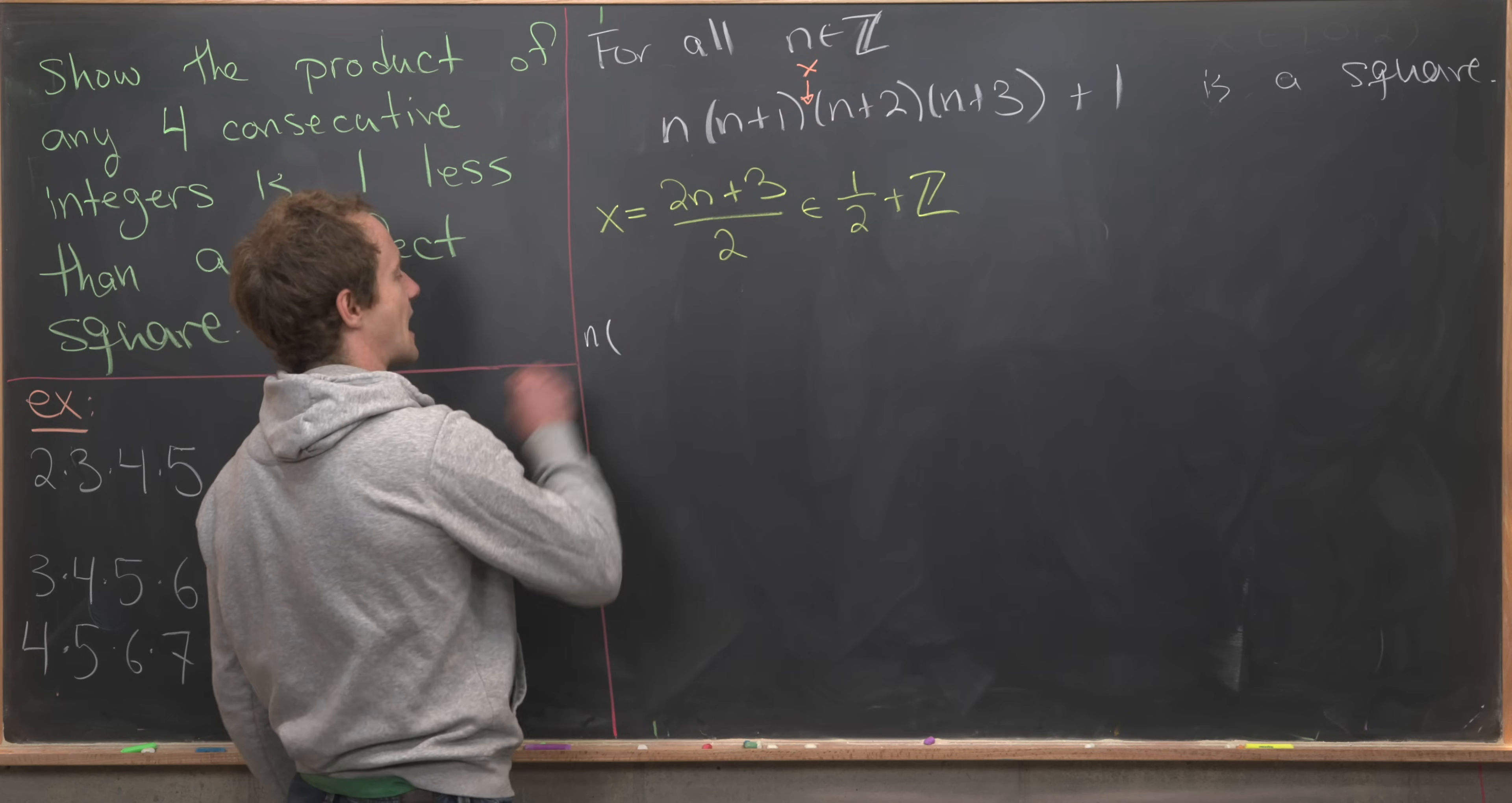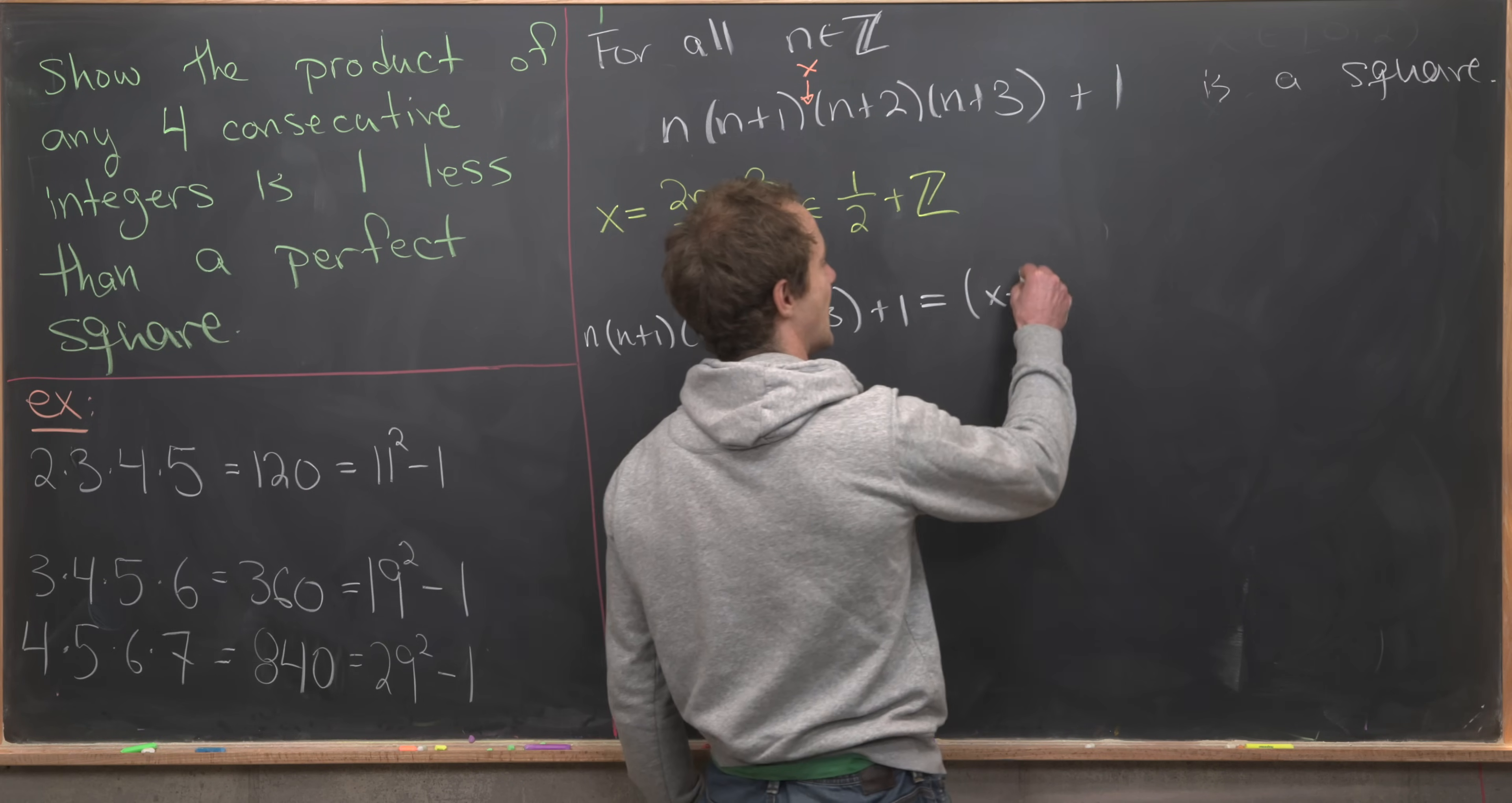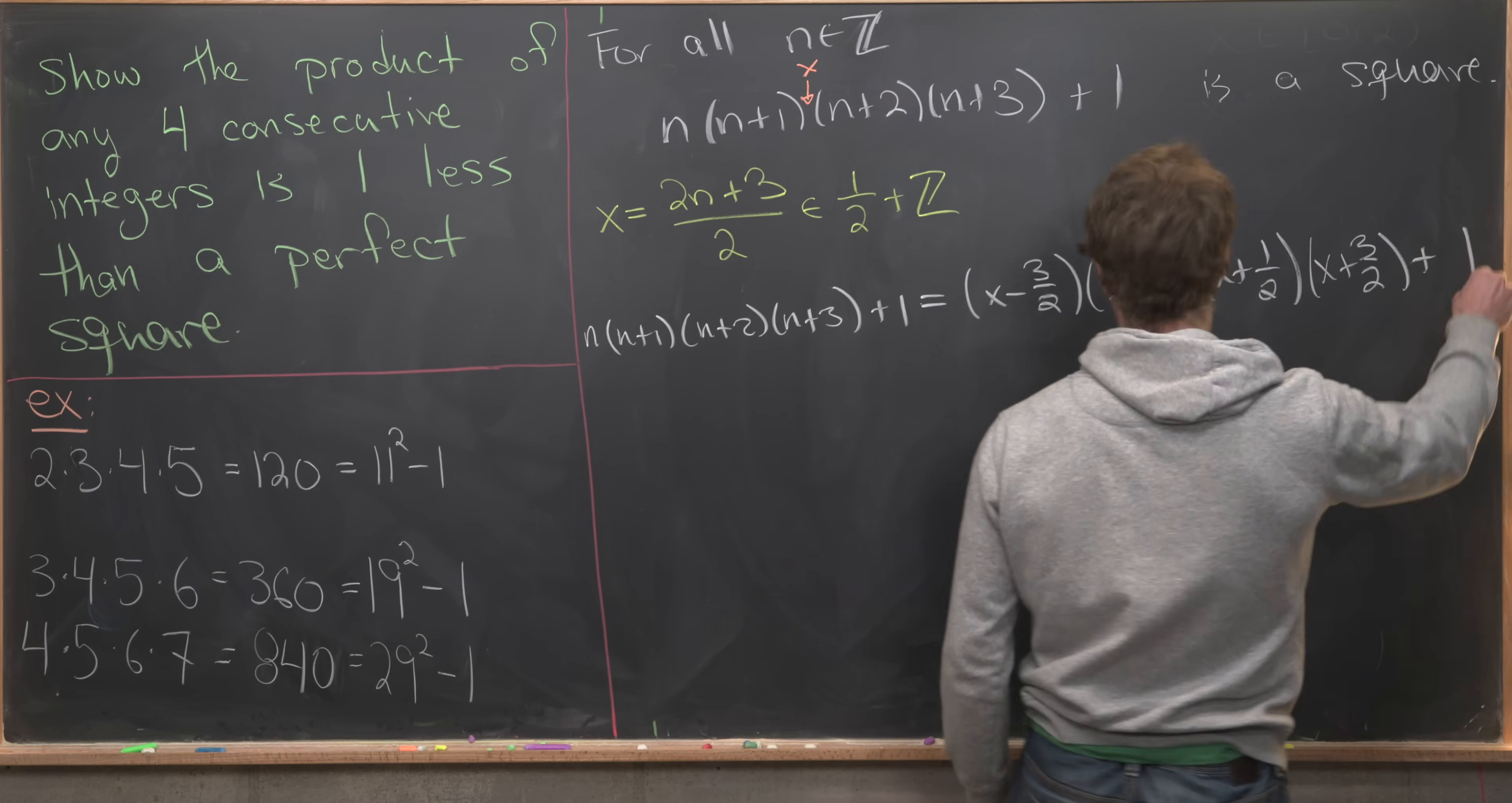So that means that we can take our n(n+1)(n+2)(n+3)+1 and rewrite it in terms of x. And this rewriting is a lot more symmetric. So this is going to be (x - 3/2)(x - 1/2)(x + 1/2)(x + 3/2) plus 1.